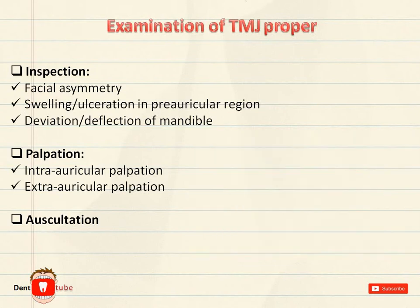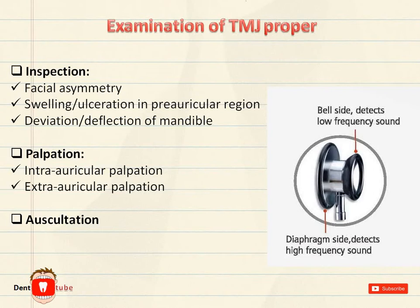Now we will auscultate the TMJ. For auscultation, the bell end of the stethoscope is placed medial to the tragus of the ear. The most commonly heard joint sounds are clicking sound, popping sound, crepitus, thud sound, and snap sound.